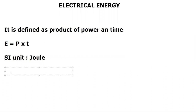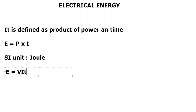There are also other formulas of electrical energy. Since one formula of power was VI, you can write E = VIt. Another formula of power was I²R, so the energy formula can be written as E = I²Rt.